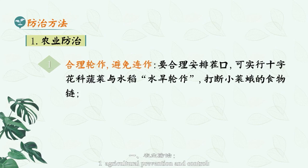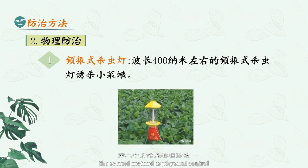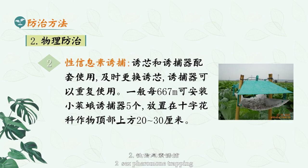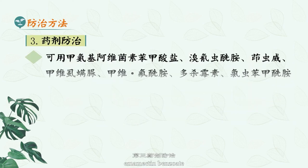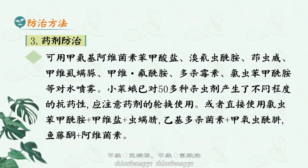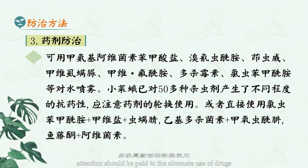Prevention and control methods. One: agricultural prevention and control — including reasonable crop rotation, avoiding continuous cropping, and cleaning the countryside. Two: physical control, using frequency-vibrating insecticidal lamps and sex pheromone trapping. Three: chemical control — Abamectin benzoate, Bromocyanamide, Indoxacarb, Chlorfenapyr, Spinosad, Chlorantraniliprole, etc. can be sprayed with water. Attention should be paid to the alternate use of drugs.